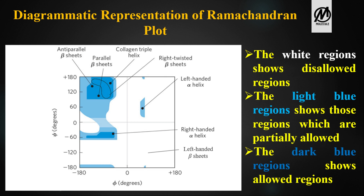The diagrammatic Ramachandran plot shows: white regions as disallowed regions due to steric hindrance from amino acid side chains; light blue regions as partially allowed regions; and dark regions as the most favorably allowed regions. Psi degrees are plotted on the y-axis and phi degrees on the x-axis. There are four quadrants in the Ramachandran plot.